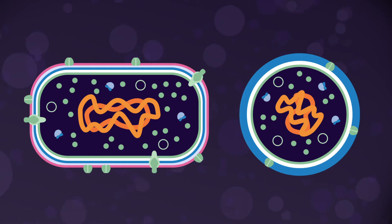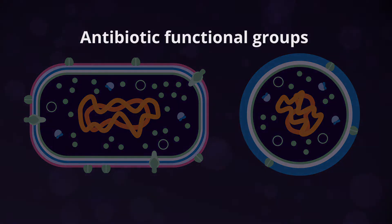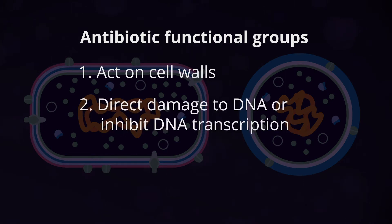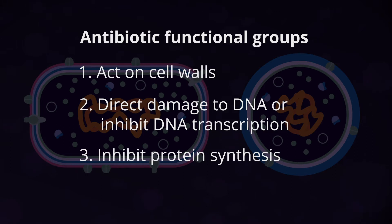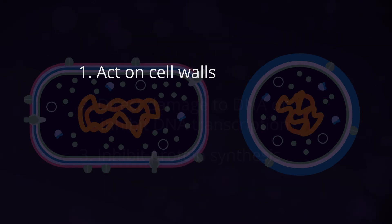The antibiotics that we most often use in veterinary practice can be arranged into four functional groups. They may act on the cell wall, damage DNA or inhibit its transcription, inhibit protein synthesis, or interrupt the folic acid pathway. We're going to go through these one by one, but let's start with the antibiotics that act on cell walls.